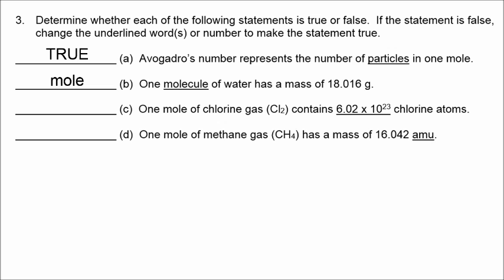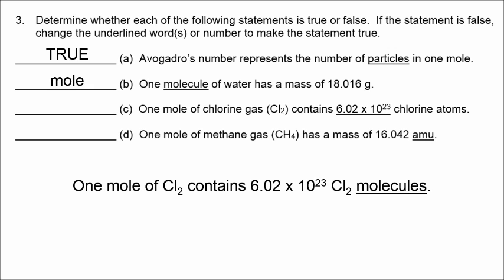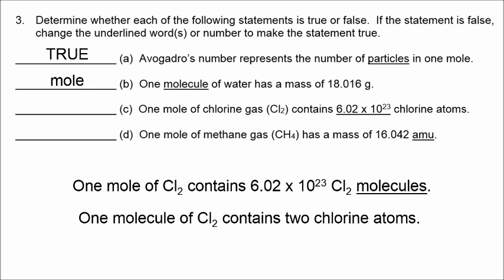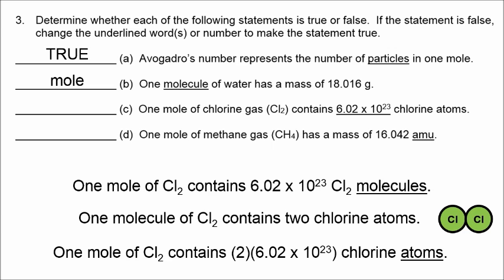For letter C, a mole of chlorine does contain 6.02 times 10 to the 23rd particles, but those particles are not atoms of chlorine. Those particles are molecules of chlorine. One single molecule of chlorine contains two chlorine atoms. So, therefore, one mole of chlorine contains two times Avogadro's number of individual chlorine atoms. So, correct answer for number 3C is double Avogadro's number, 1.20 times 10 to the 24th.